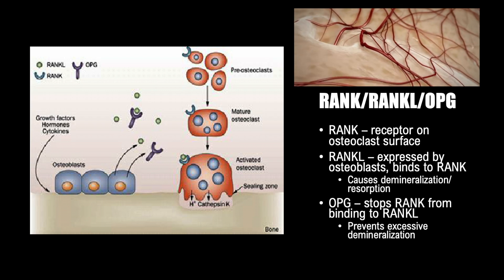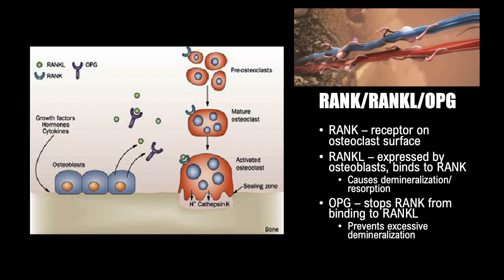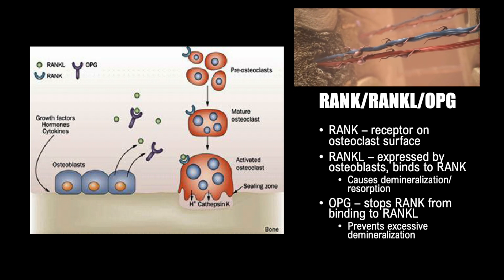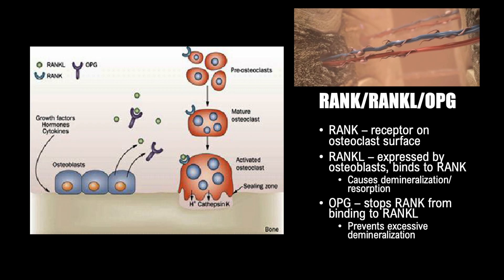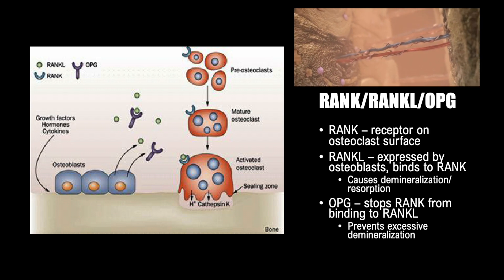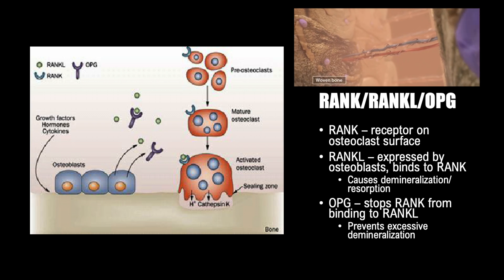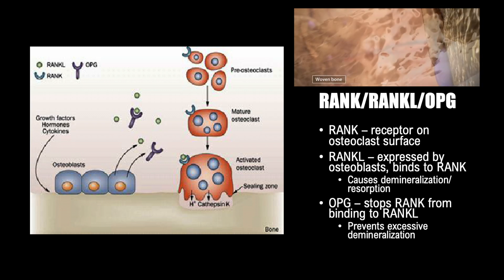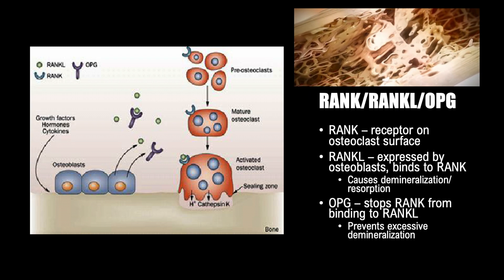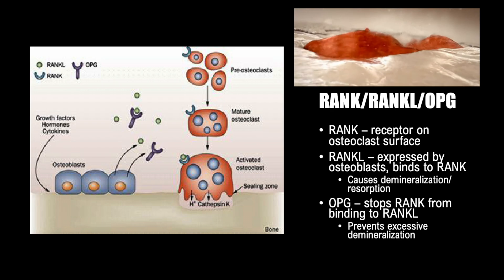Osteoprotegerin, or OPG, is released by osteoblasts once enough bone resorption has taken place and blocks RANKL from binding to RANK. The bone resorption process is inhibited when OPG is released. This entire process takes about three to six months to complete.